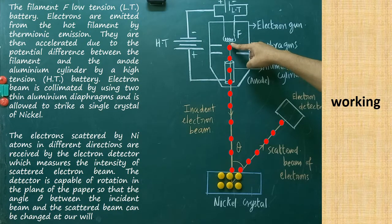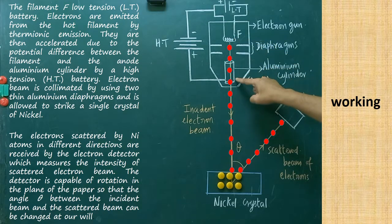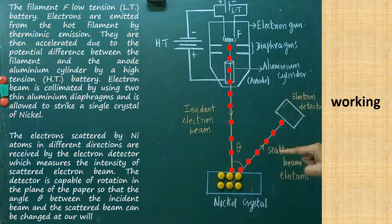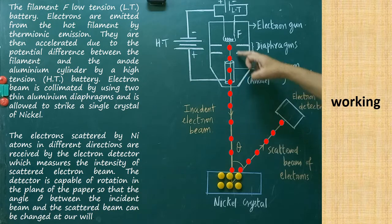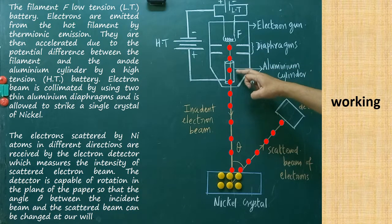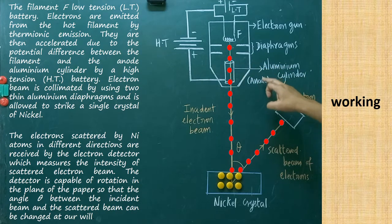Electrons are emitted from the hot filament by thermionic emission. They are then accelerated due to the potential difference between the filament and the anode. A high-tension battery is connected between the filament and anode, setting up a very high potential difference. The electron beam is collimated and accelerated by the aluminum cylinder, and collimated by two diaphragms. The collimated electrons are accelerated by the anode, which is made up of an aluminum cylinder.